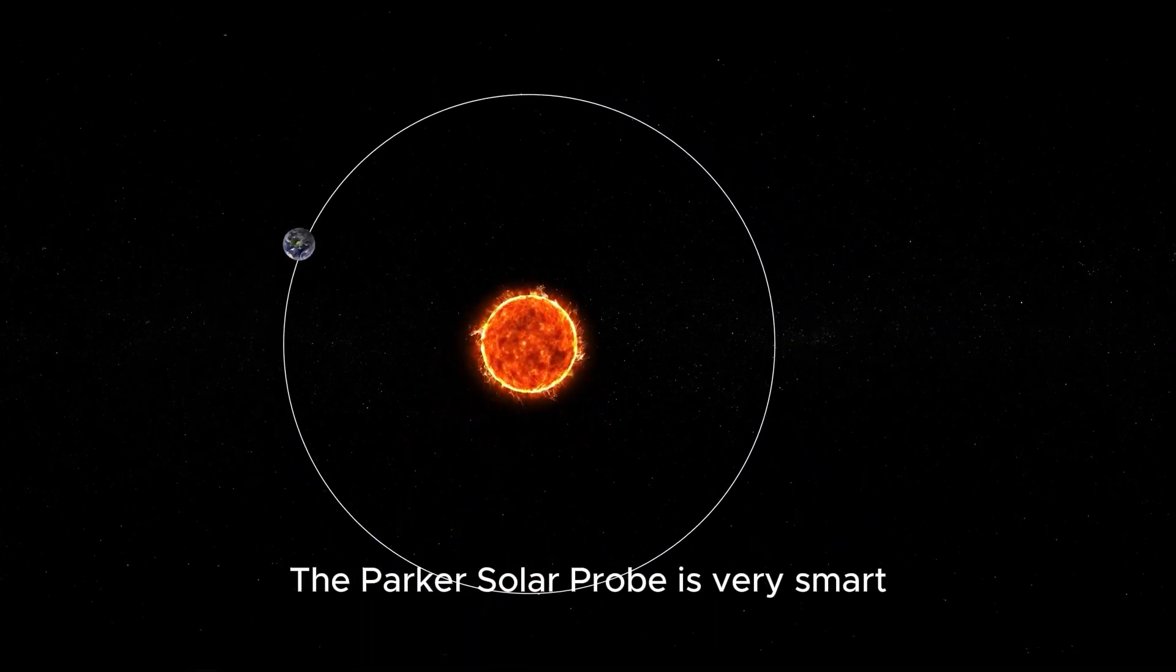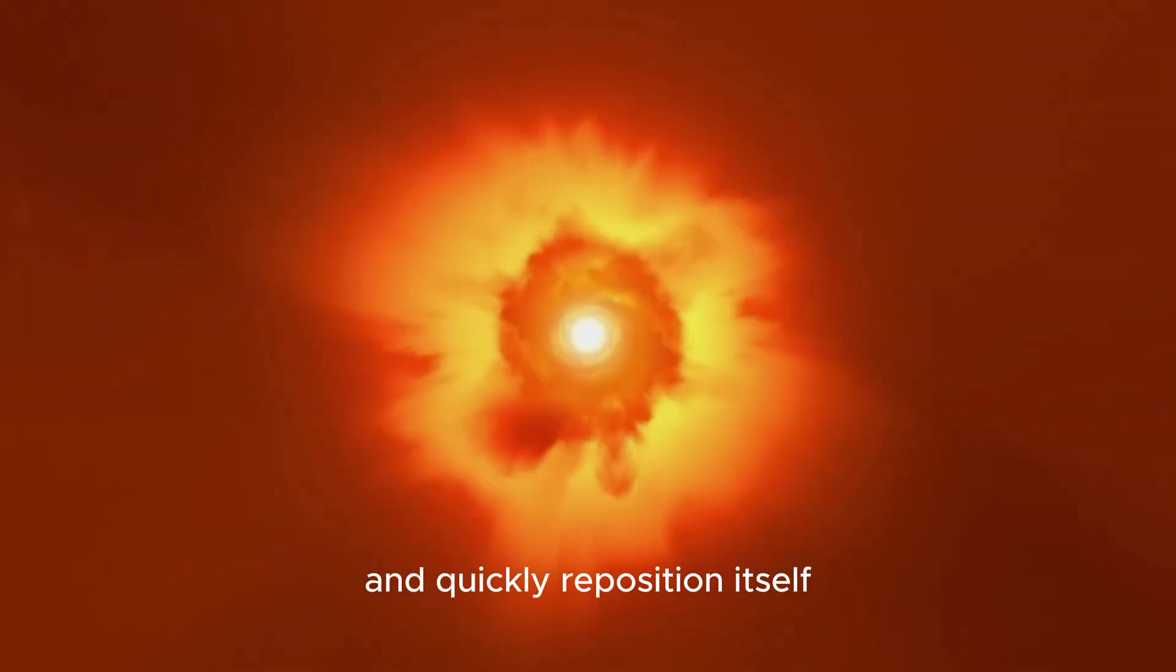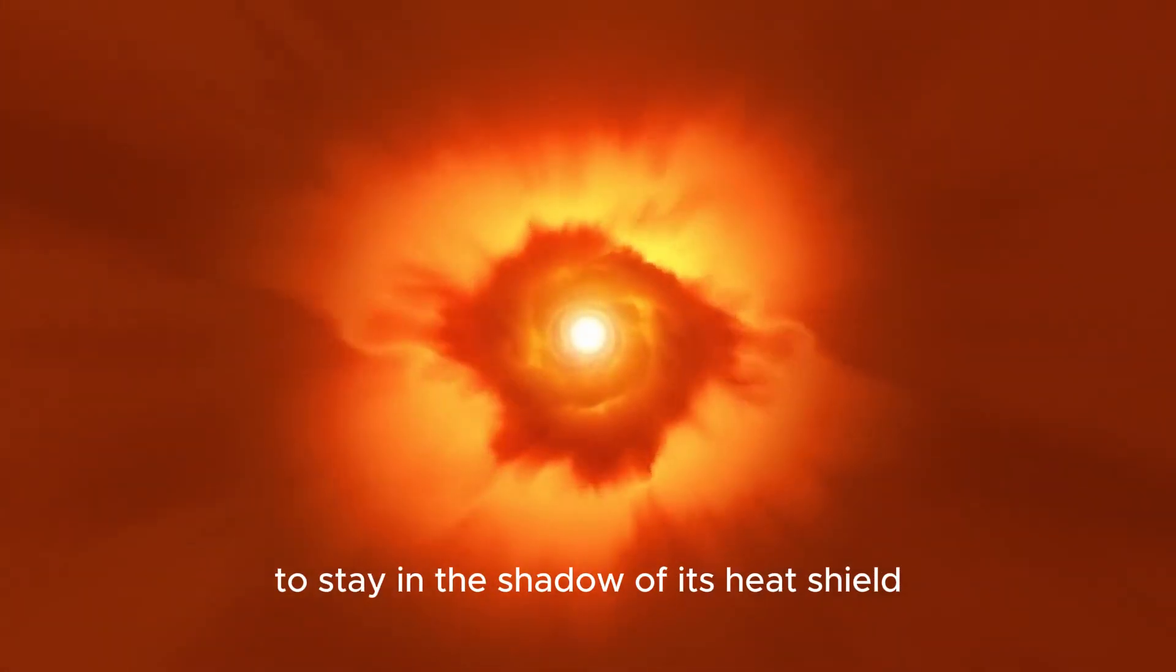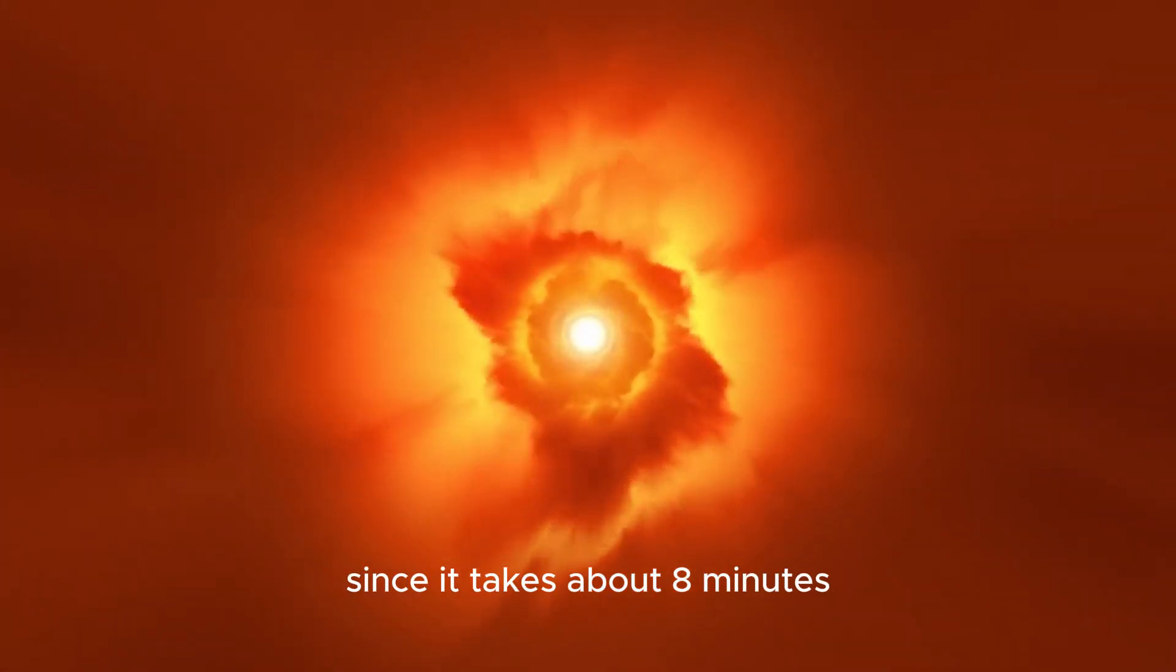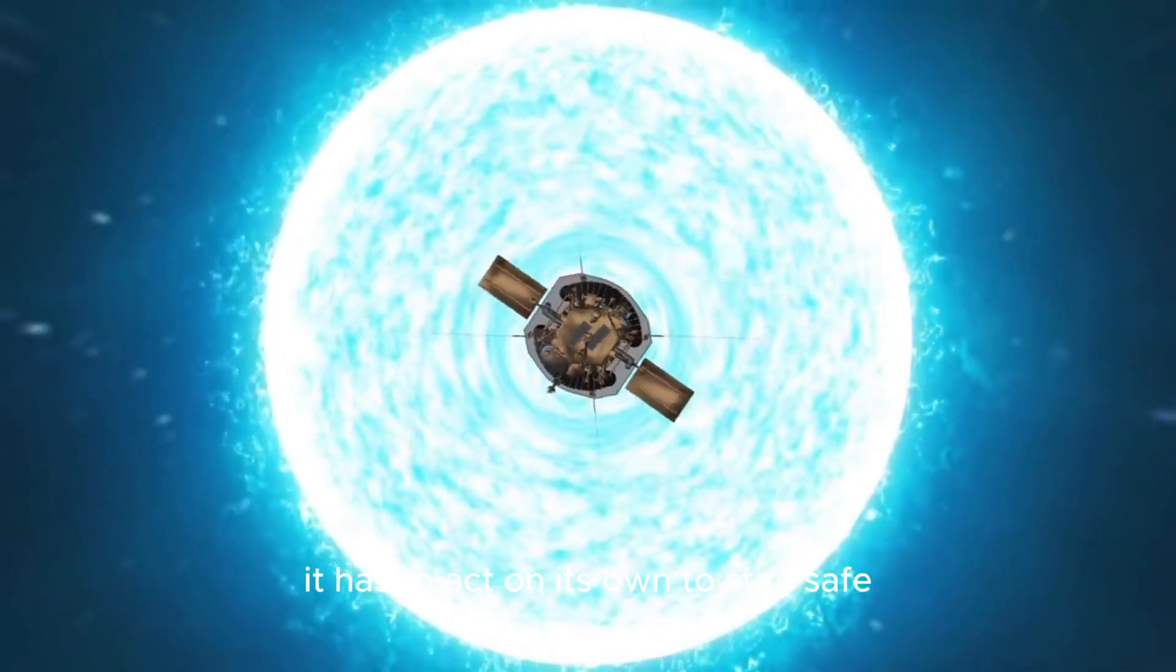The Parker Solar Probe is very smart. It has four light sensors that can spot sunlight and quickly reposition itself to stay in the shadow of its heat shield. Since it takes about eight minutes for signals to travel between the probe and Earth, it has to act on its own to stay safe.